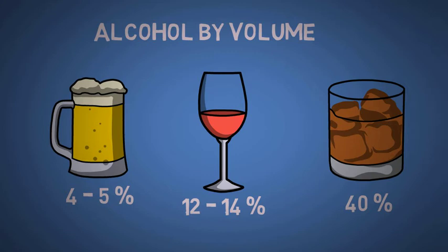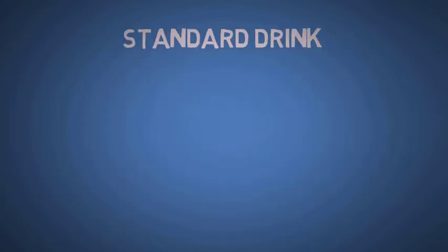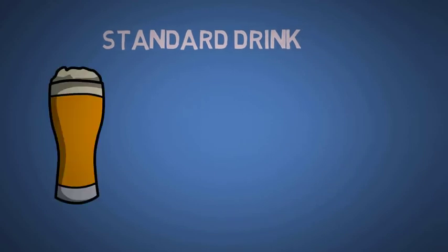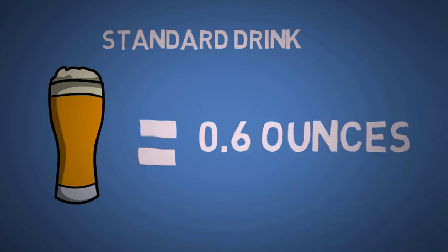So that's each volume, how much alcohol does it have. You also need to understand the concept of standard drink, which is basically 0.6 ounce of alcohol.